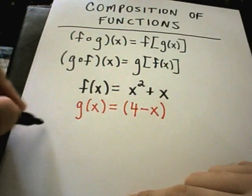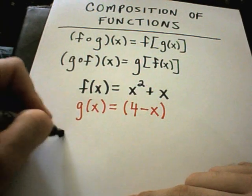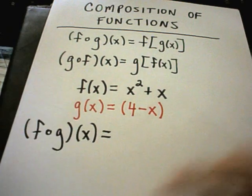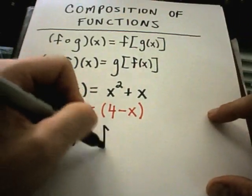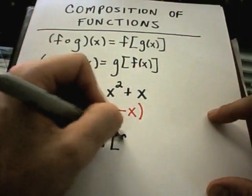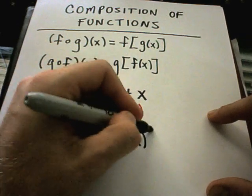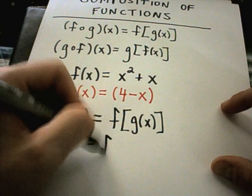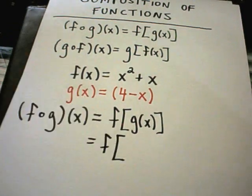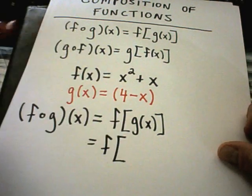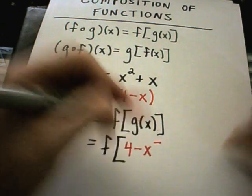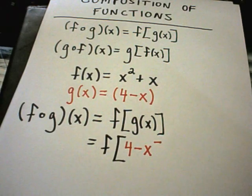Suppose we want to figure out f of g of x. What that means is we want f of g of x, and I can plug in g of x. I know what g of x is. G of x is the equation 4 minus x, so that's what I'm going to substitute in.